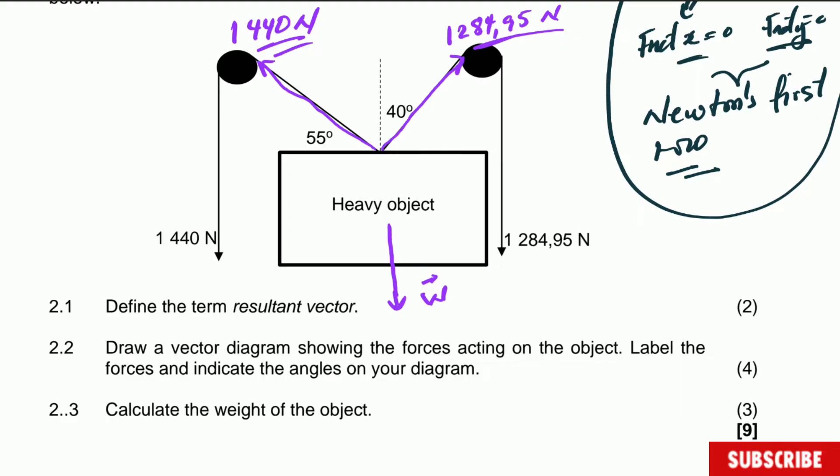I define the term resultant vector: the resultant force is the sum of two or more vectors — that will be accepted. Question 2.2 says: draw a vector diagram showing the forces acting on the object. Label the forces and indicate the angle on your diagram. They don't give you a scale, so it doesn't need to be to scale, but let's do it as accurately as we can.